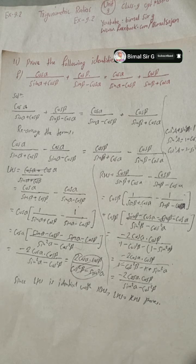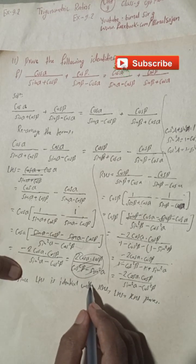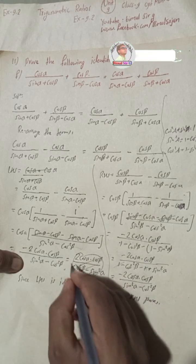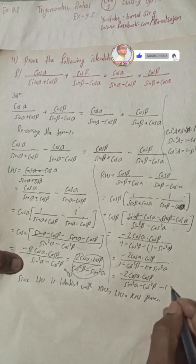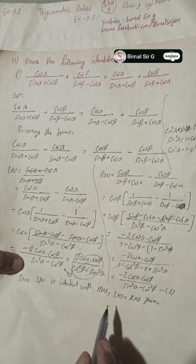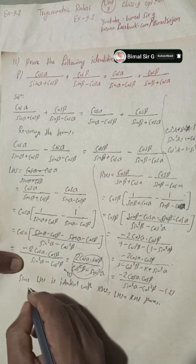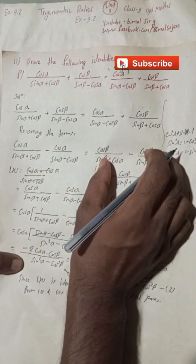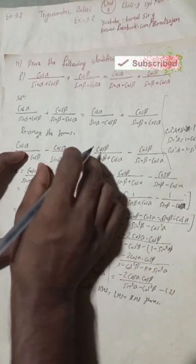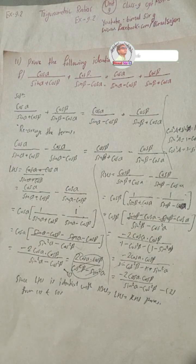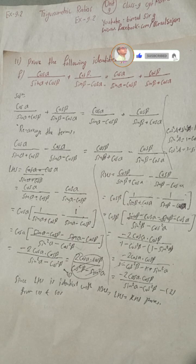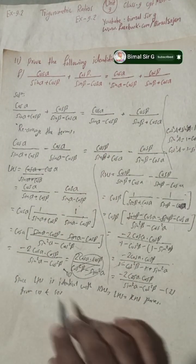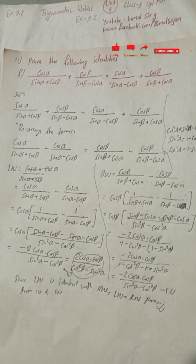From equations one and two, this equals this, and we can write these steps to prove the identity. Either method is a complete solution. If you have any doubts, please feel free to comment in the comment box. I will make other videos with other solutions.